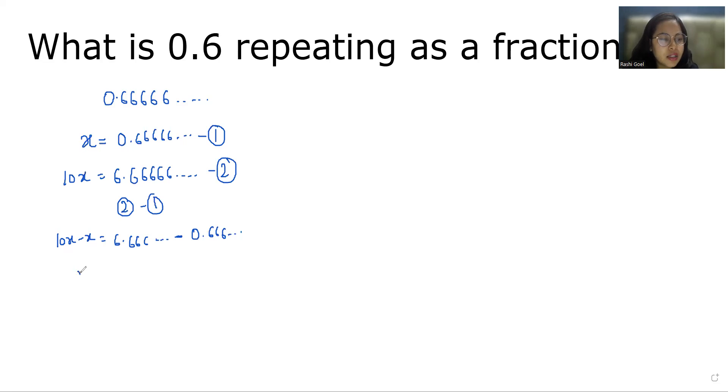So 10x minus x equals 6.666 and so on minus 0.666 and so on. So 10x minus x is 9x, 6 minus 0 is 6, and this 0.666 will subtract with 0.66666. So 9x equals 6. Now I'm going to divide with 9 both sides.